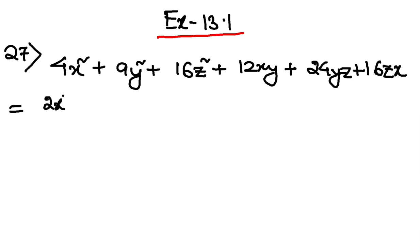So 4x squared is 2x whole squared, 9y whole squared is 3y whole squared, and 16z squared is 4z whole squared. Okay, now after that,